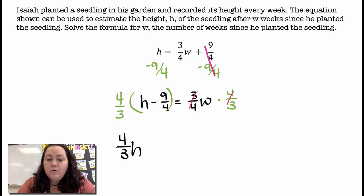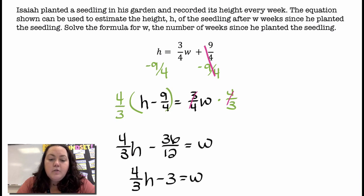4 thirds times 9 fourths, multiplying fractions, no big problem, top times top, over bottom times bottom, I get 36 twelfths and I brought down the minus sign. Okay. And 36 divided by 12 would give me 3, so I just go ahead and simplify that to 4 thirds h minus 3 equals w.